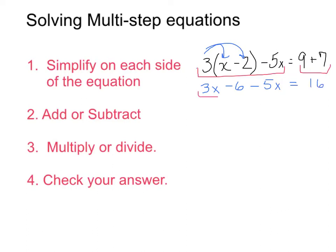I next can combine the 3x and the negative 5x to get negative 2x minus 6 is equal to 16. So at this point, I've simplified on each side of the expression. I can't go any further. I can't combine negative 2x and minus 6 and I can't do anything else with the 16. So once I've completed this first step of simplifying on each side of the expression, I'm going to be left with basically a normal two-step equation, which we've worked at.